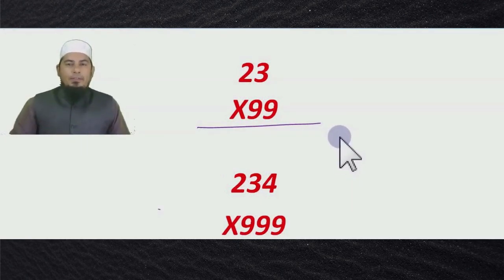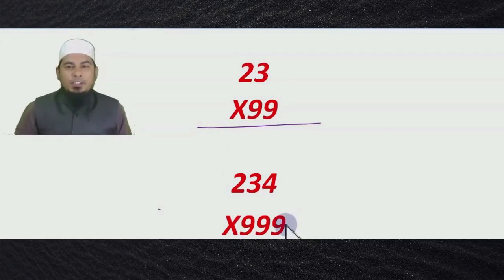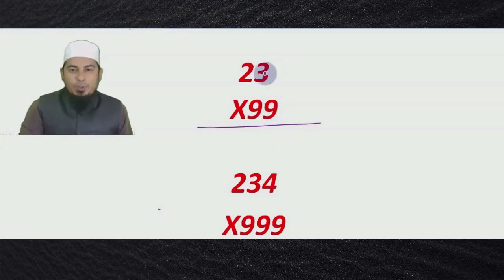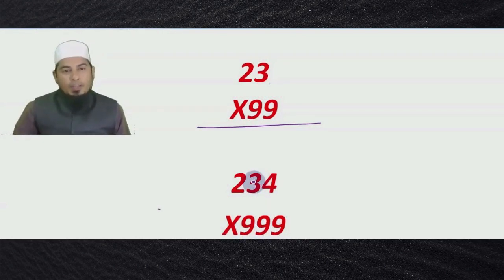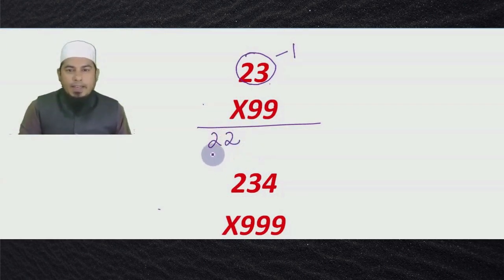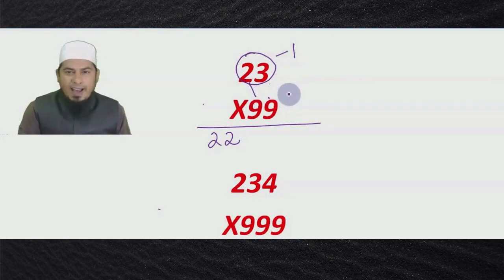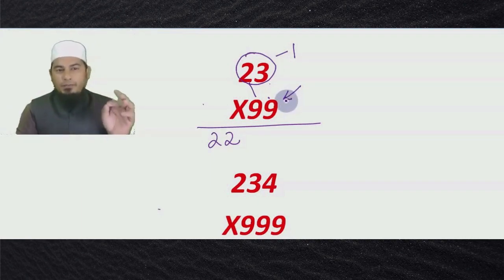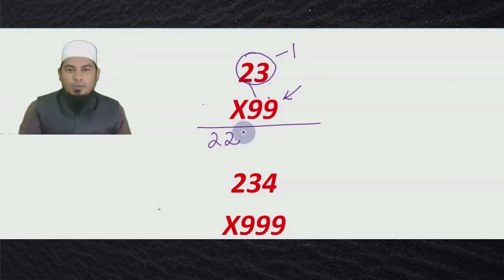Welcome! In this video lesson we are learning the shortcut trick to multiply a number of digits with a number of nines — two-digit number with double nine, three-digit number with triple nine, four-digit number with four nines. The technique is: whatever number you have, subtract one and write it. Then each digit should be subtracted from nine. The last digit from the right side should be subtracted from ten. So nine minus two is seven, and ten minus three is seven.